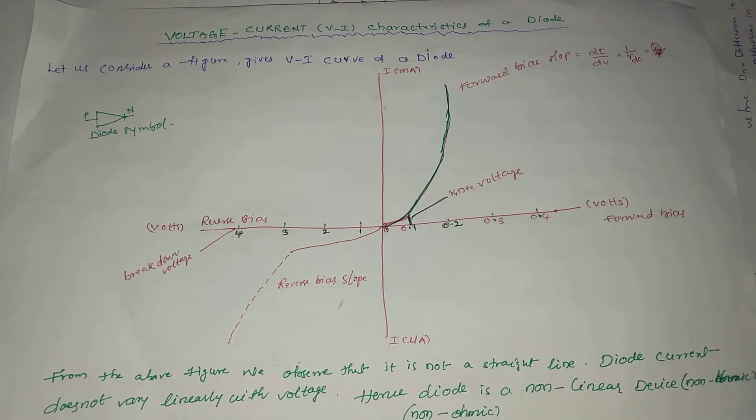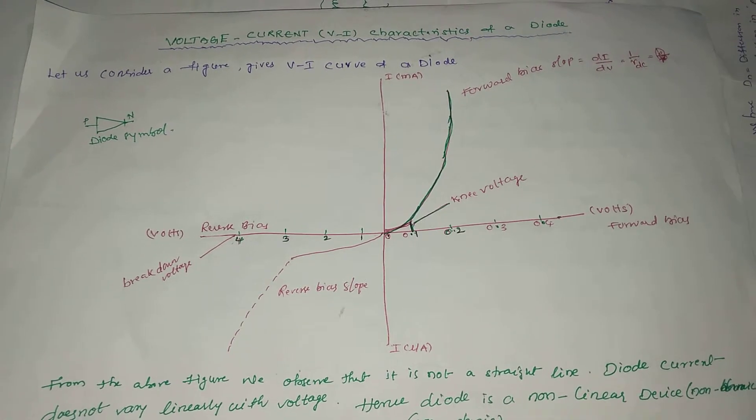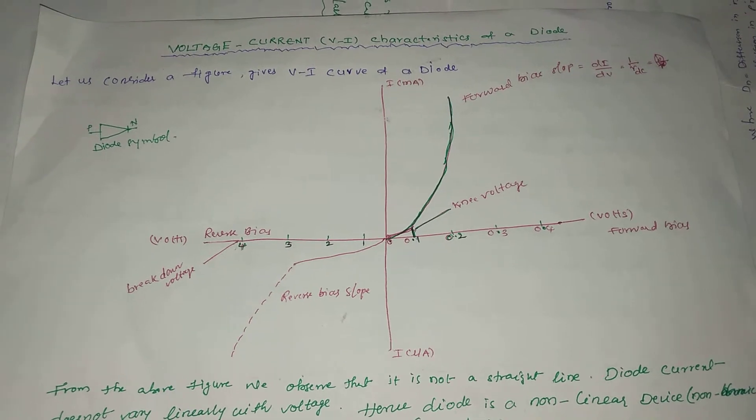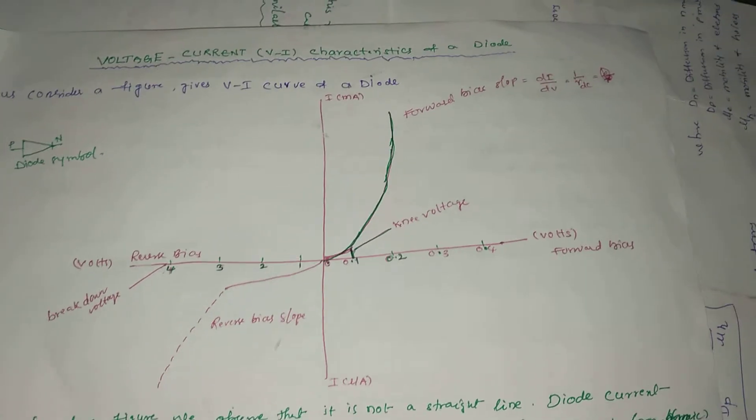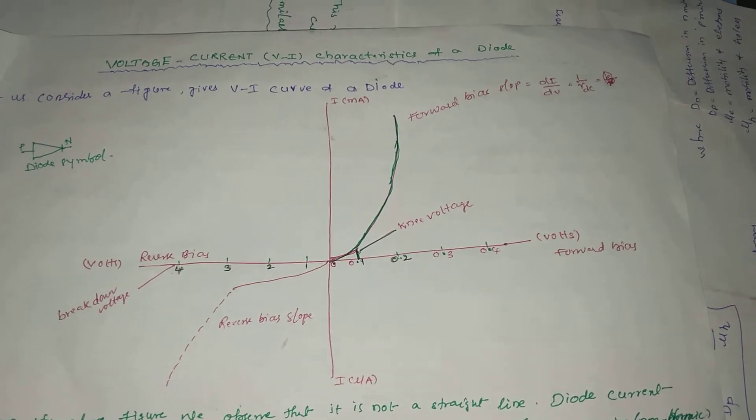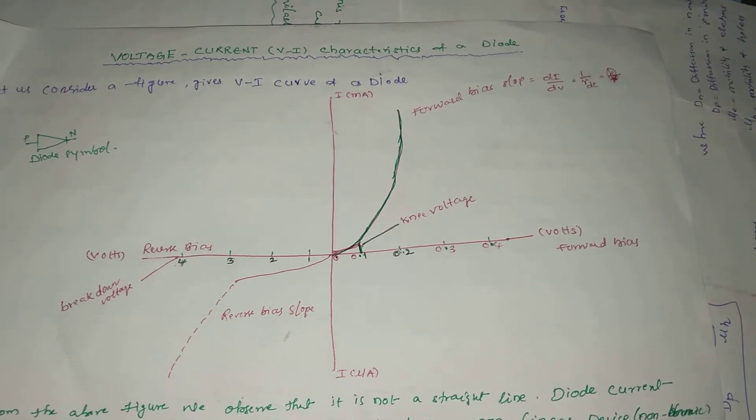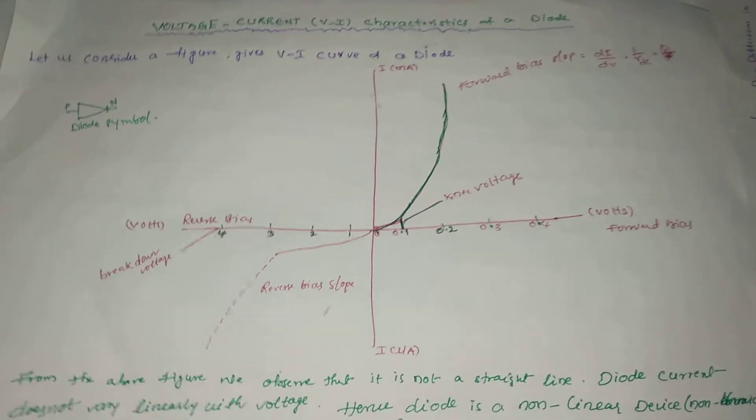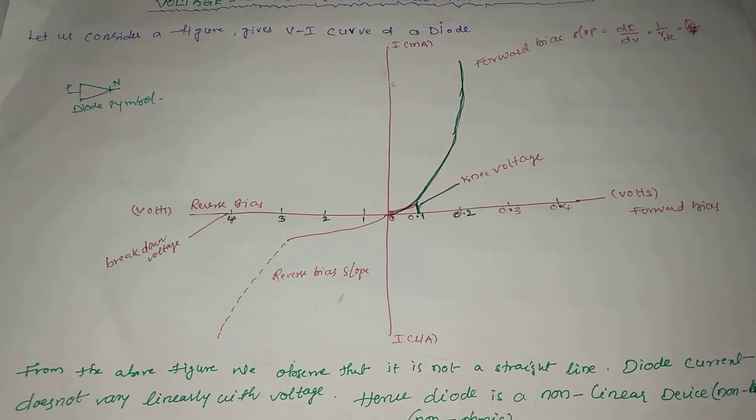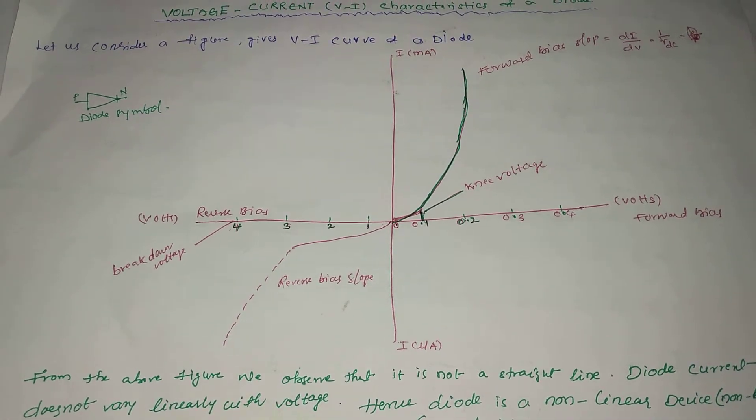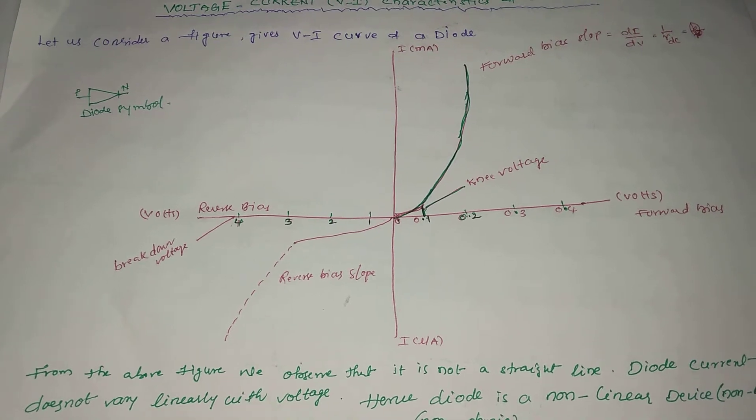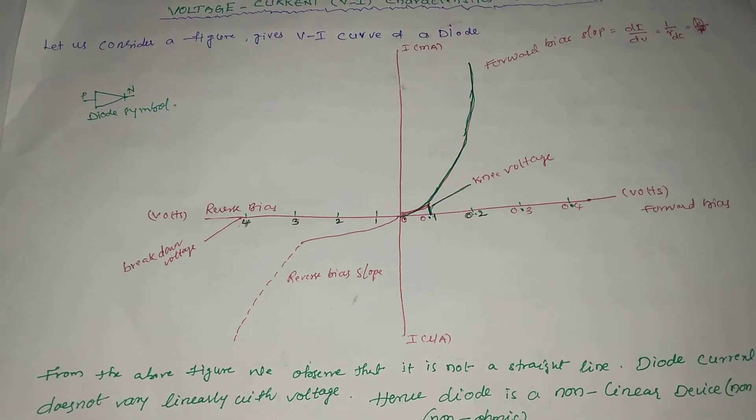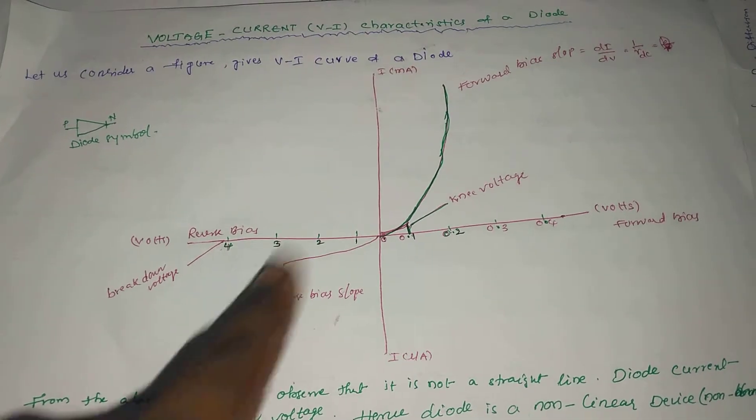So at 0.1, we find a particular voltage that is called knee voltage, and this is the forward bias slope which is dI/dV equal to 1/R_DC where R_DC is dynamic resistance. In reverse bias, we see that at 0.4 there is breakdown voltage and this is the reverse bias slope.